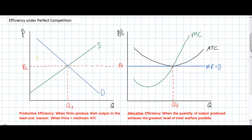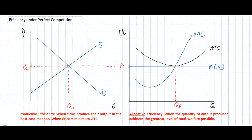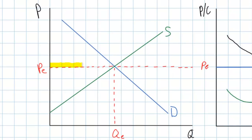Earlier in the course we explained that consumer surplus refers to the total well-being of consumers who were willing and able to pay a higher price than the equilibrium price of the good in the market. Graphically, consumer surplus is indicated by the area of the triangle below the demand curve and above the equilibrium price. The triangle outlined in yellow in our graph on the left represents the consumer surplus in this market.